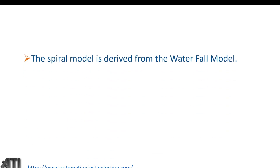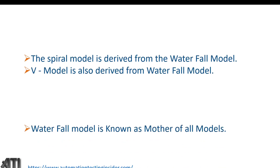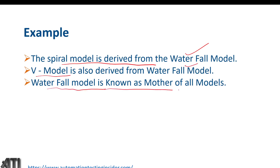To summarize, the spiral model is derived from the waterfall model, and the V model is also derived from the waterfall model. The waterfall model is known as the mother of all models. It is also called the traditional model, and more or less all other models are derived from it. These are the examples of derived models.